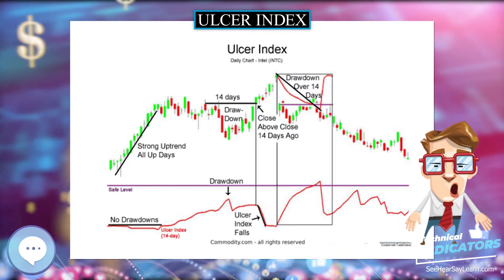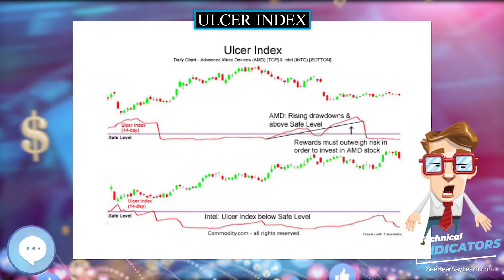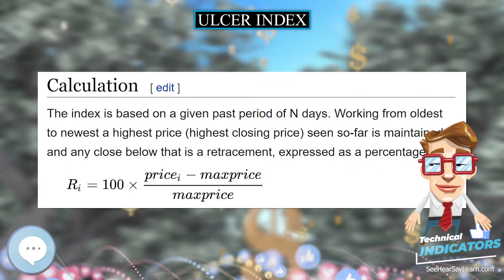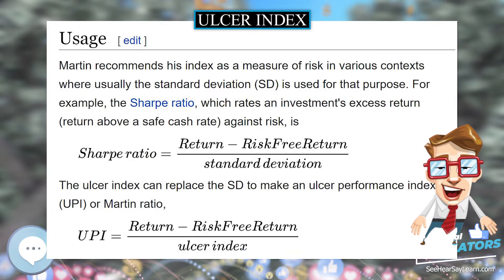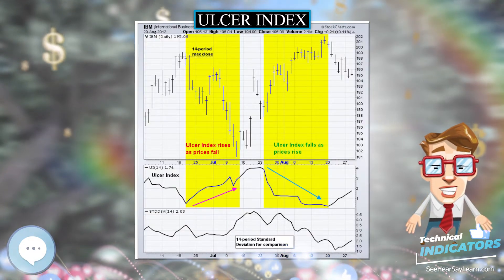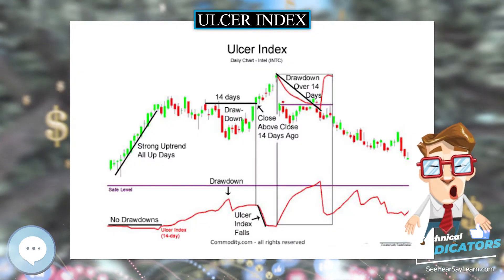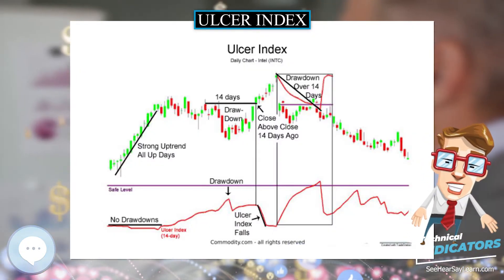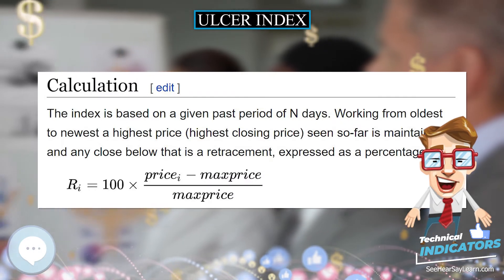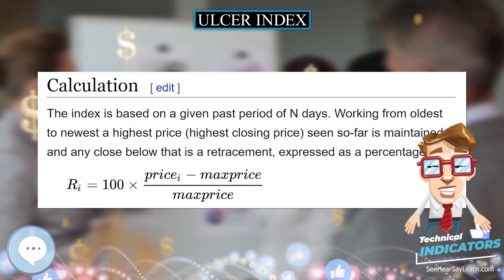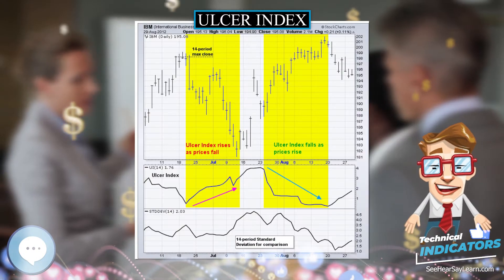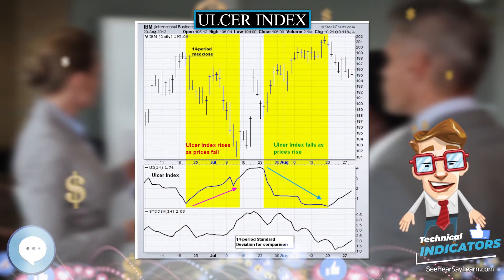The index is based on a given past period of N days, working from oldest to newest. The highest closing price seen so far is maintained, and any close below that is a retracement expressed as a percentage. For example, if the high so far is five dollars, then a price of four dollars and fifty cents is a retracement of minus ten percent. The first R is always zero, there being no drawdown from a single price.